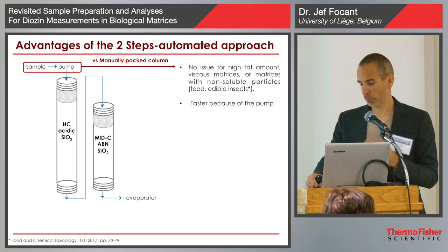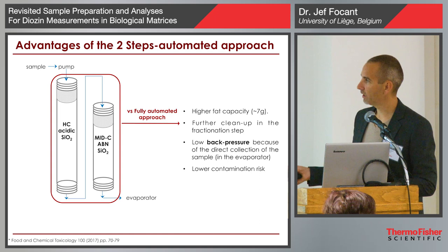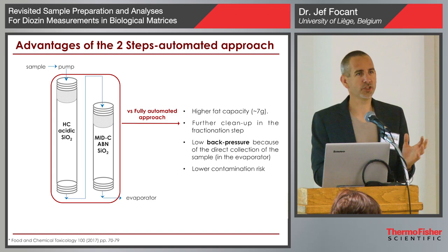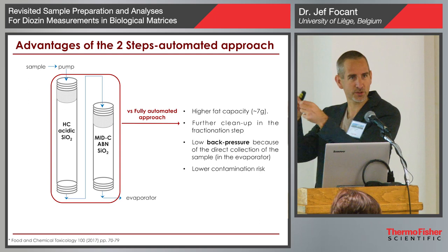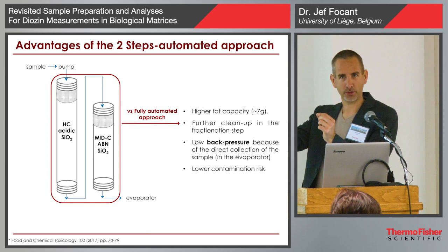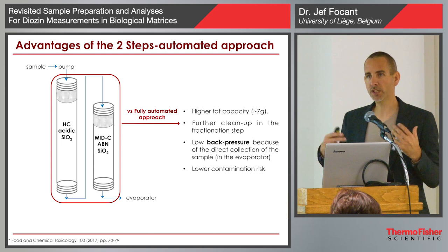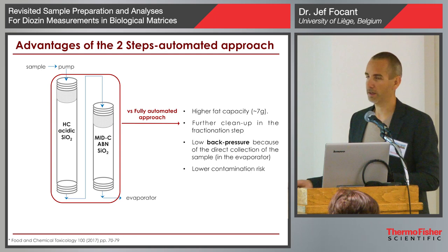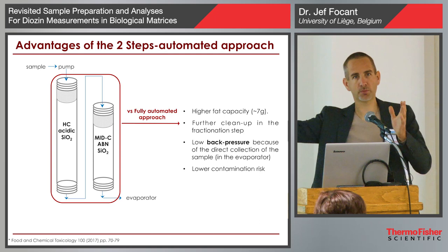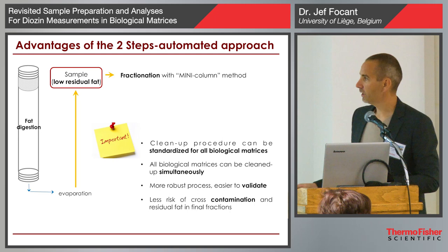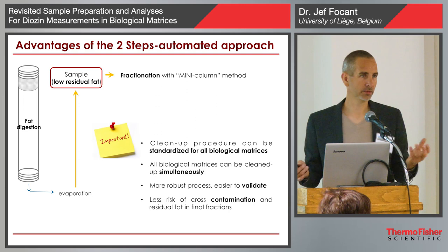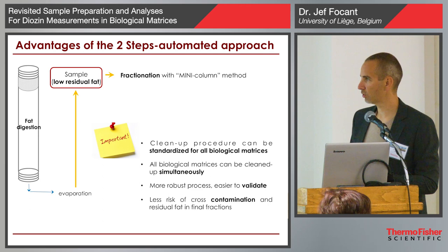Chiara compared doing that automatically versus manually — there are pros and cons, but you can look at it carefully. You could say: why disconnect the pre-fat digestion from the cleanup itself? Just connect it and feed the first silica column directly. But the more columns you put in series, the higher the back pressure. So independently of your sample type, you can use that procedure. That's the idea — and it also reduces the risk of cross-contamination between samples.